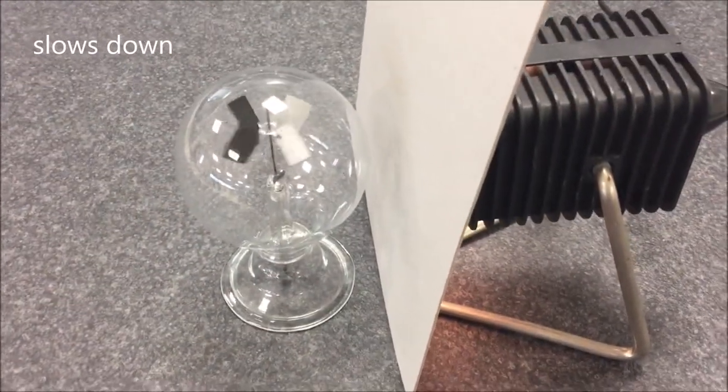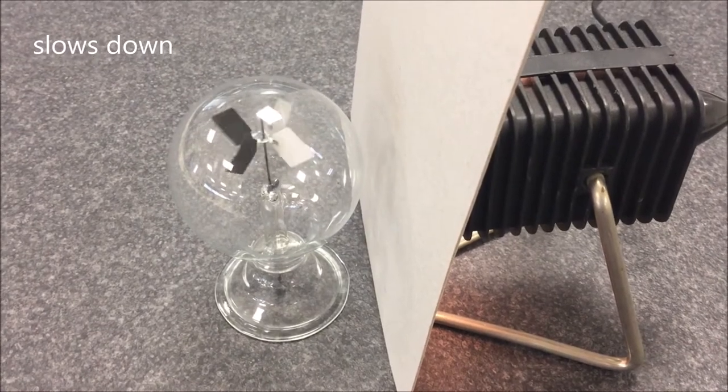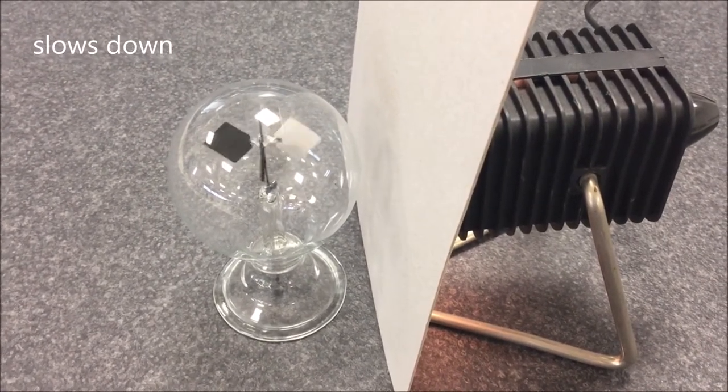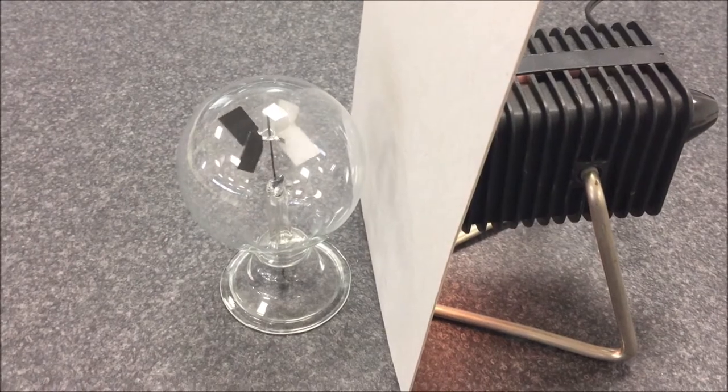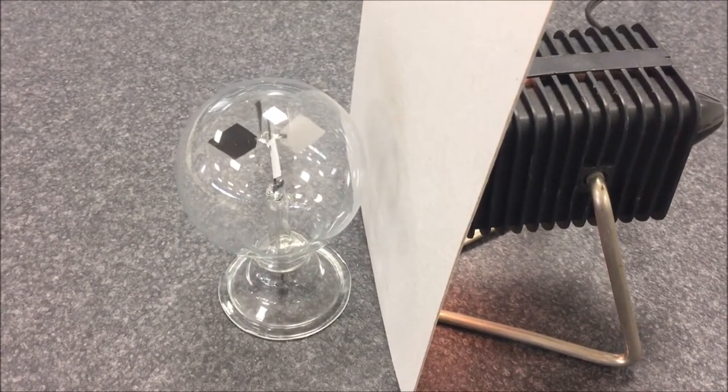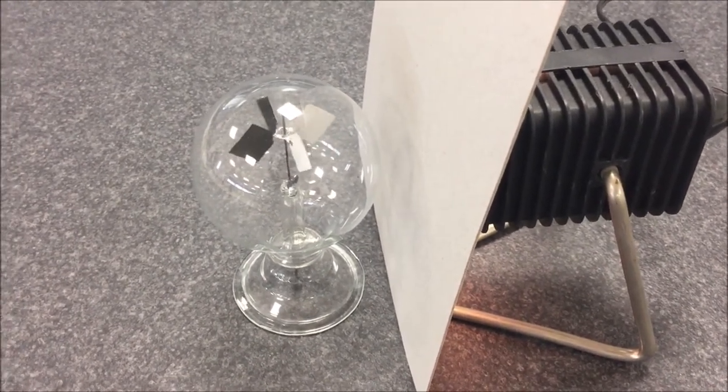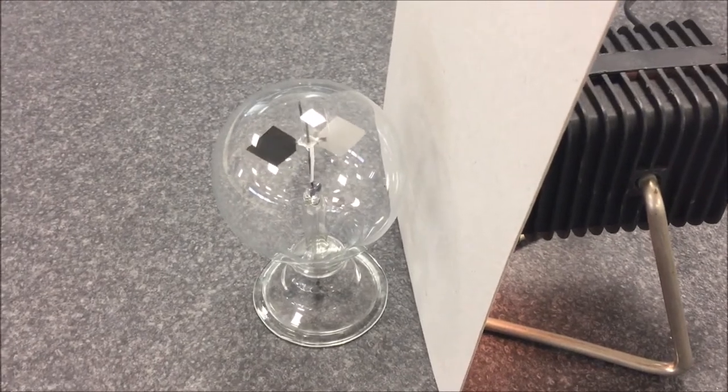Now when the light is blanked off, they slow down and stop. Then when the light is allowed to shine back on them, the paddles move away from the black side.